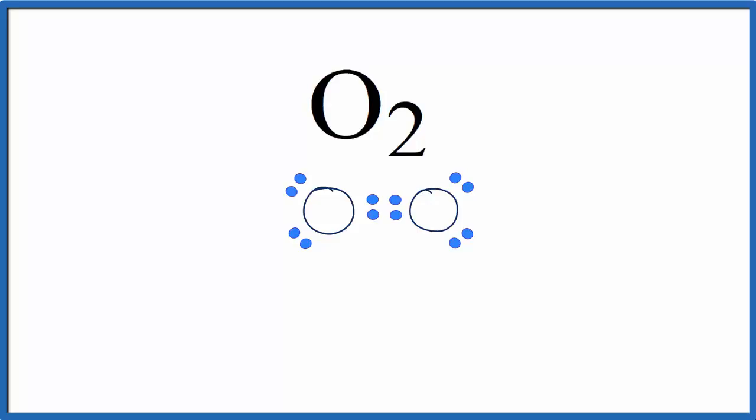Since they have the same attraction, they're going to share the electrons equally. And we really can't say one has an oxidation number that's positive and the other has one that's negative, because they're equal. We consider the oxidation number, or oxidation state, to be zero.